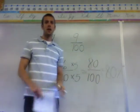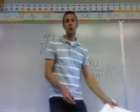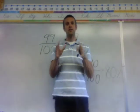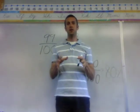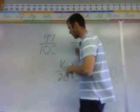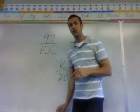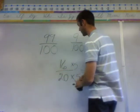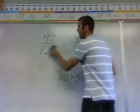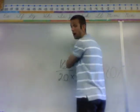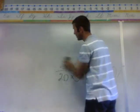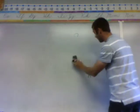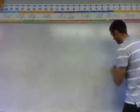And we know that 80 hundredths is 80%. So when you have a fraction and you need to change it to a percentage, or you have a part of a group and you want to change it to a percentage, if you can make 100 the denominator, then you can solve it very easily.